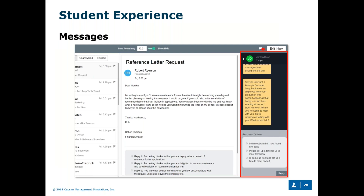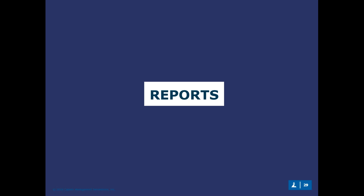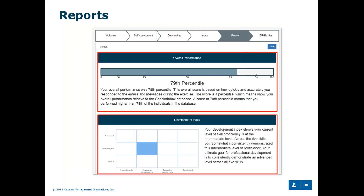Once they complete the simulation portion of the exercise, we're going to give them a detailed feedback report. First and foremost, we demonstrate to the student their overall performance by percentile against other CAPSIM Inbox users — and we do have two sample groups: one for higher education and one for high school, so high school students are not measured against the same level as MBA students. Below that we provide a developmental index showing how proficient and how consistent they were at picking the most effective responses.